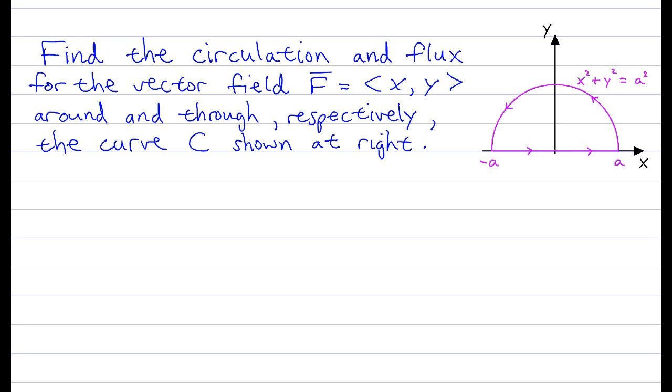We want the circulation around this curve that's shown over here. It's a closed curve. It's got this semicircle here in the top, and that's going to a straight line segment from x equals minus a to plus a. So we want the circulation around that curve, as well we also want to calculate the flux through the curve.